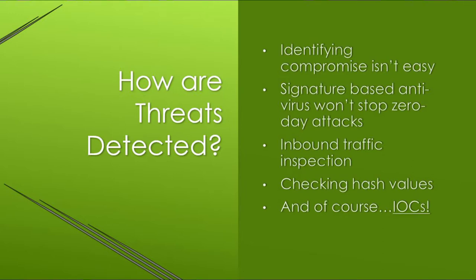Using hash values and other identifiers of malicious files is definitely beneficial, but hash values can be easily changed. In fact, an attacker can easily modify malware to change the hash value manually, or even more cleverly, they can write the code so each file can change the hash value with each infection, all without the help of a person. This is a polymorphic virus, and they make signature-based antivirus nearly useless.